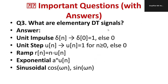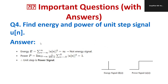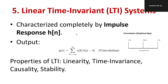A stable system follows the BIBO condition — bounded input, bounded output. An unstable system violates this condition. Elementary discrete time signals: unit impulse δ(n) = 1 at n=0, else 0; unit step u(n) = 1 for n ≥ 0, else 0; ramp signal r(n) = n·u(n); exponential signal a^n·u(n); sinusoidal signals cos(ωn) and sin(ωn). It is recommended to draw the diagrams for these signals.